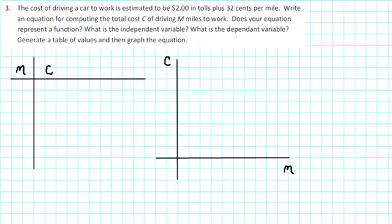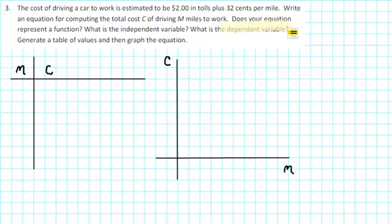I'm not going to answer these questions in order. The first thing I notice is that in order to figure out the total cost, I'm going to need to know the number of miles driven. In other words, the cost depends on the number of miles driven. So the first question I'm going to answer is: what is the dependent variable? The dependent variable is the one that depends on the other. In this case, the cost depends on the number of miles driven, so C is the dependent variable.